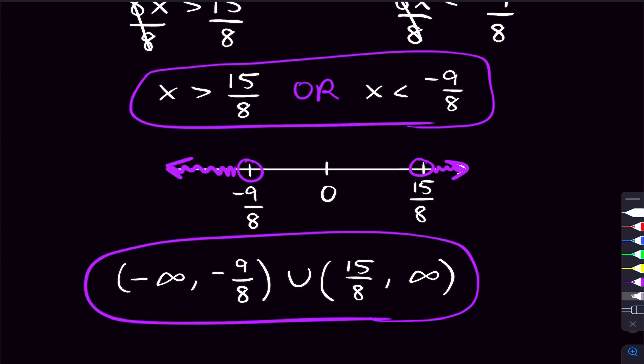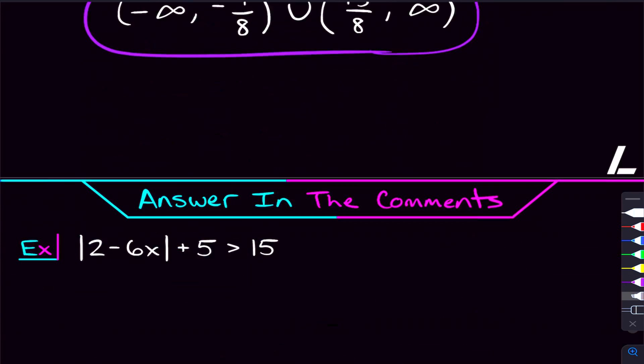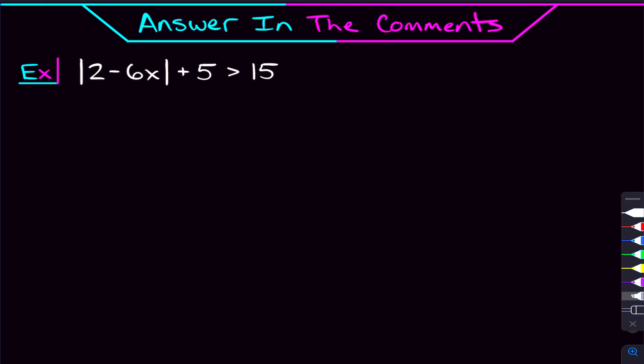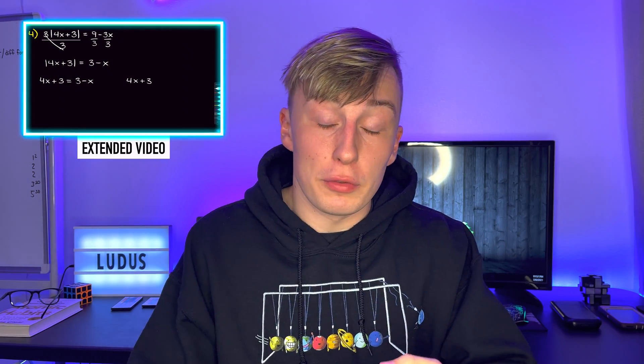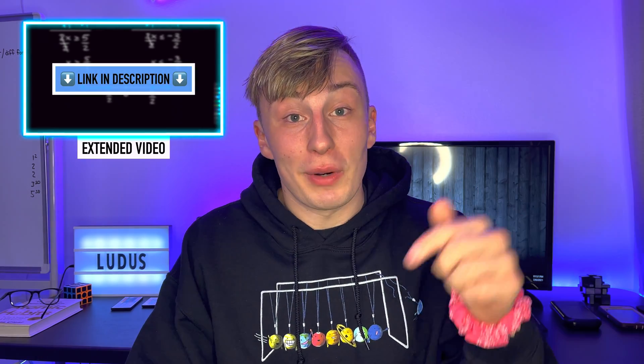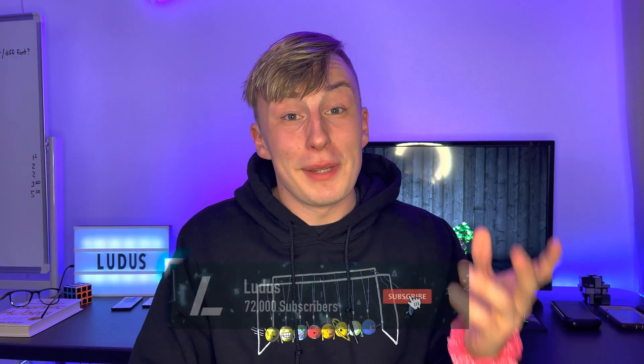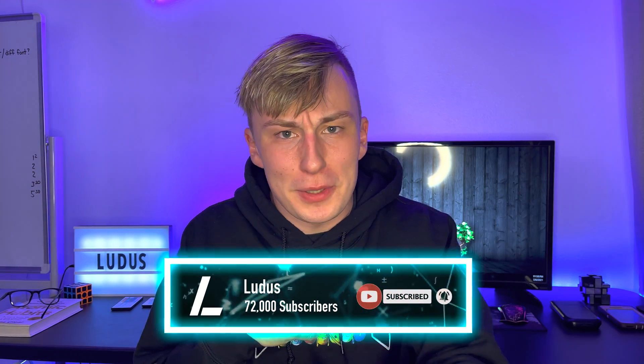That is absolute value inequalities in a nutshell. If you feel pretty good with this, here's another problem to try in the comments: the absolute value of 2 minus 6x plus 5 is greater than 15. Let me know your answer, and if you have any questions, let me know in the comments. I do have that extra video in the description where we'll go through more absolute value inequalities and equations — 10 problems in total. If you have a quiz or test coming up, check that link and grab the notes while you're at it. Make sure you're subscribed to the channel, and I will see you soon.